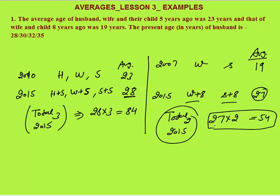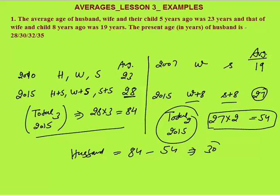The total present age of all three is 84, out of which the combined present age of wife and son is 54. So the husband's present age will be 84 minus 54 equals 30 years. That is the second option.